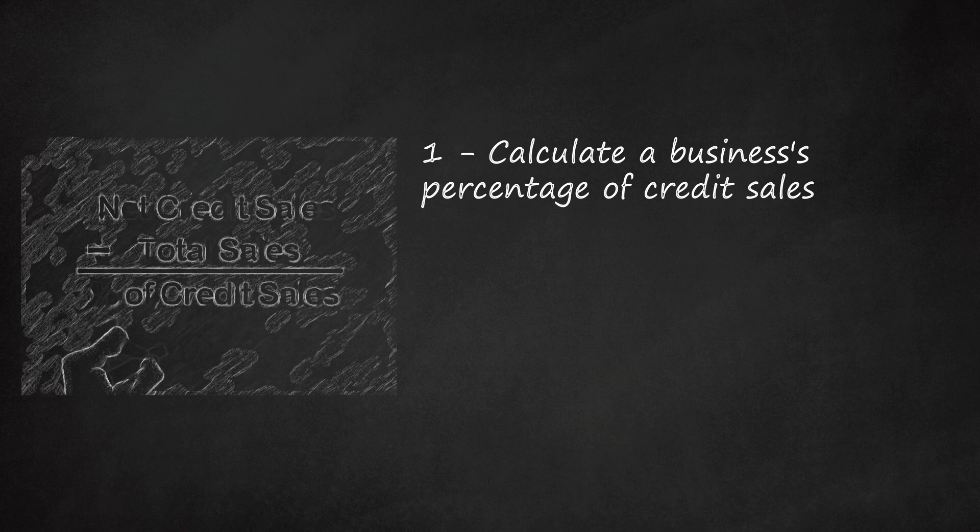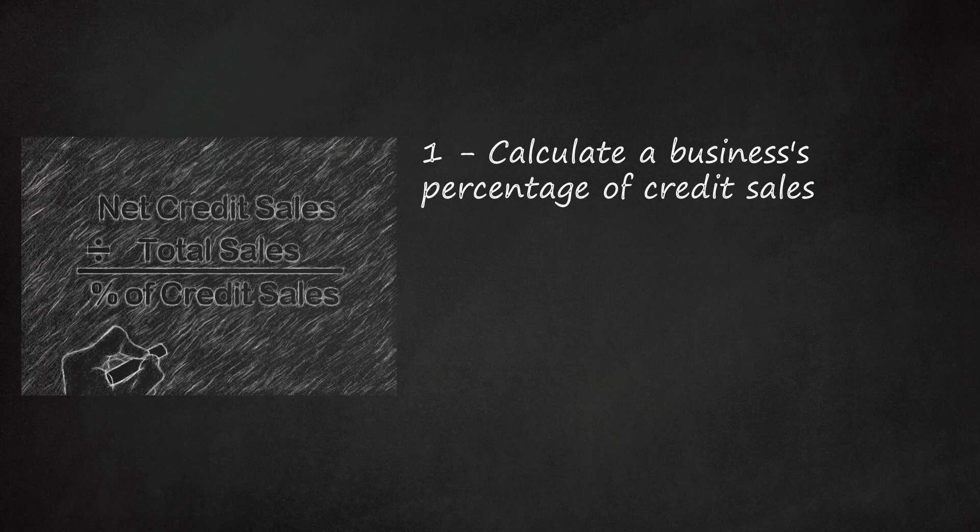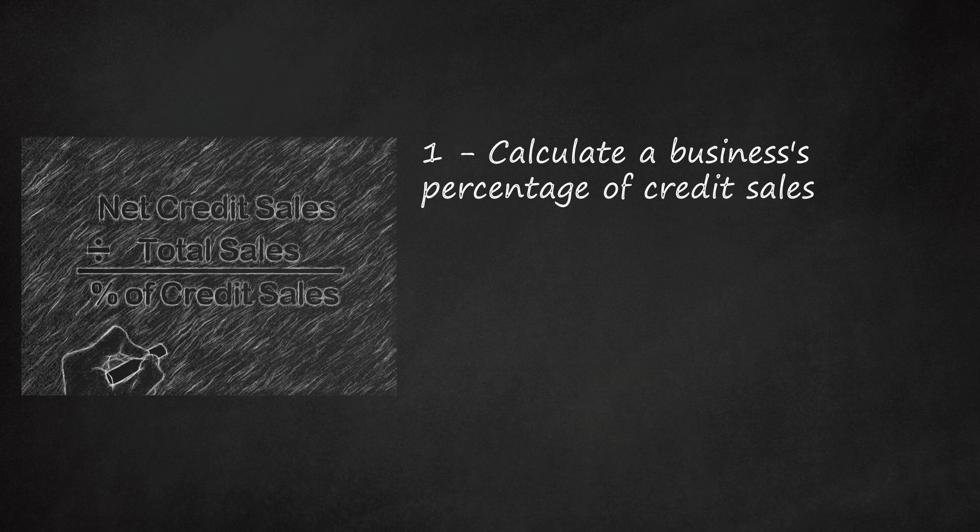Finding a business's percentage of credit sales will tell you what proportion of their total sales were made as credit sales. This can be calculated by dividing net credit sales by total sales for the period. The result should be expressed as a percentage. It can then be compared to the same value for other companies. This ratio can also be used to assess a company's susceptibility to liquidity issues, as a higher percentage of credit sales means that the company is dependent on its customers' timely payments to maintain its cash flows.